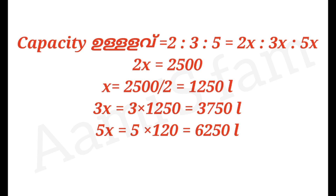The capacity will be in the ratio 2 is to 3 is to 5, giving us 2x, 3x, 5x. The smallest tank is 2x equals 2500, so x equals 1250. Then 3x equals 3 times 1250, and 5x equals 5 times 1250 equals 6250.